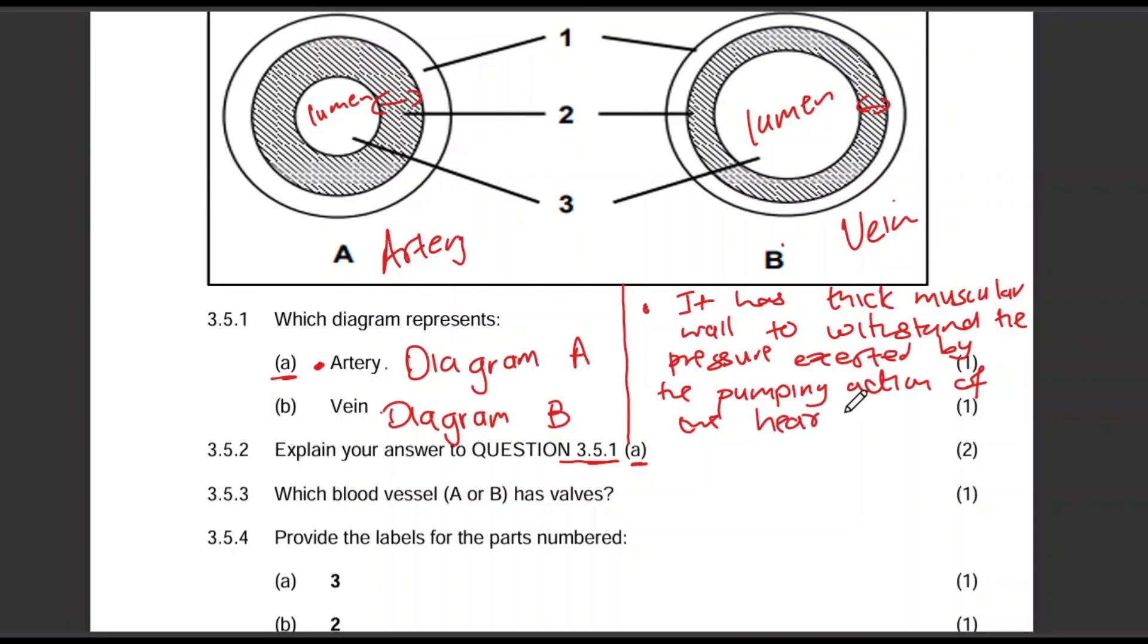Remember the artery will carry blood away from the heart. So that is oxygenated blood that is transported in the artery. You can speak about the lumen also. The lumen is smaller in diameter to facilitate, to facilitate faster movement, or to create higher pressure. Alright. Okay.